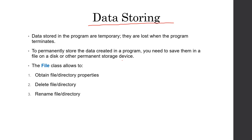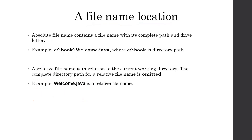We have a special class called the File class that allows us to access files. It allows us to obtain file properties — for example, we can check whether we can read data from a file, whether we have access to it. The File class also allows us to delete or rename a file. When we want to access a file, we need to specify the location of the file.